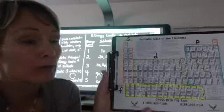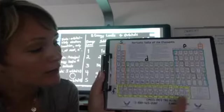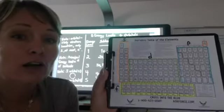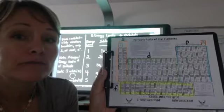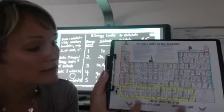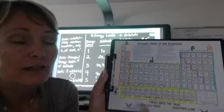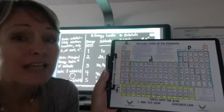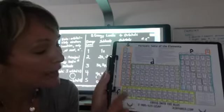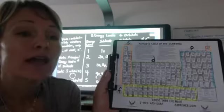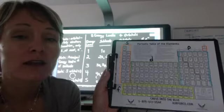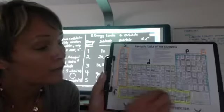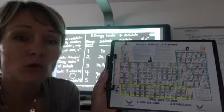Now, the f orbitals are down here at the very bottom of our periodic table. And there are fourteen electrons that can fit in the f orbitals. Remember, there are seven orbitals. And if each one of those held two electrons, that would be a total of fourteen electrons that can fit in those f orbitals.